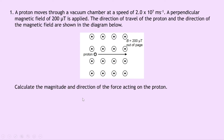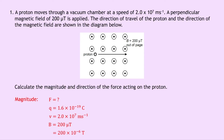It says to calculate the magnitude and direction of the force acting on the proton. Because the charge is moving perpendicular to the field, we can use F equals QVB to find the magnitude. Writing down what we know: we're finding force F; the charge Q is 1.6 times 10 to the minus 19 coulombs; the speed V is 2.0 times 10 to the 7 meters per second; and B, the magnetic induction, is 200 micro tesla, or 200 times 10 to the minus 6 tesla.